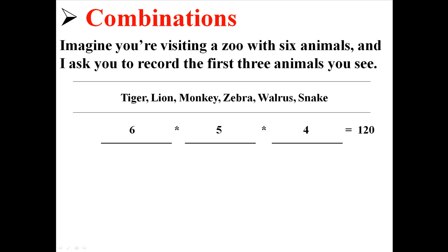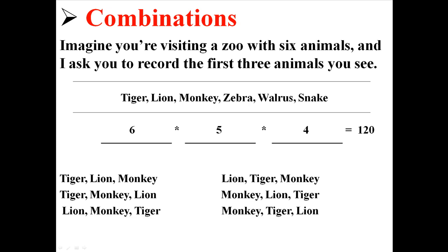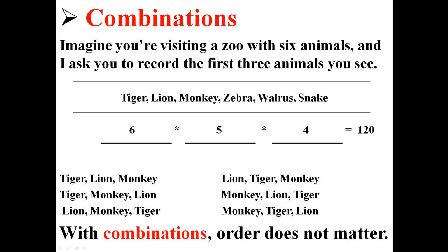So if we were to multiply all those things, we would get 120. There are 120 permutations of animals. But now realize, if you get something like a tiger, a lion, and a monkey, there's actually six different ways of writing those same three animals. Now when we're talking about combinations, order doesn't matter. So these six entries that we have here, they only count as one thing, because it's just the same three animals.